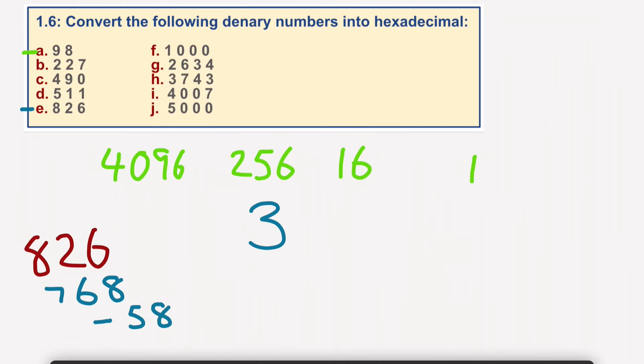So we need to work out how many 16s would appear in 58. Well, again, that would be 3 because 3 times 16 equals 48. So I'm going to take 48 away from that, which would leave us 10.